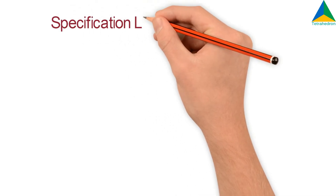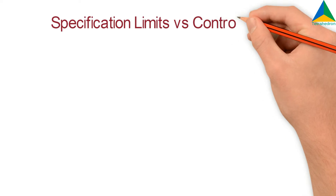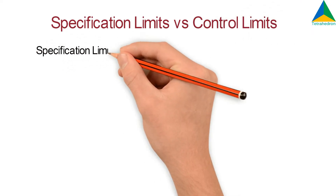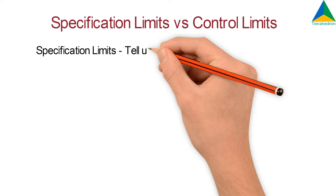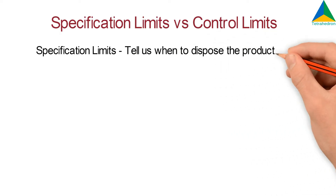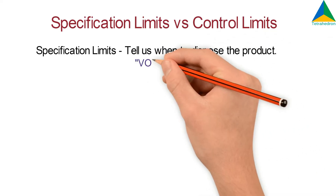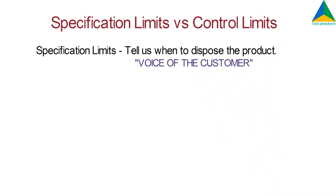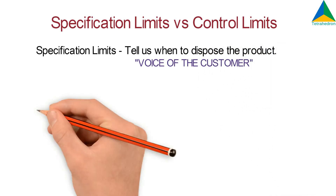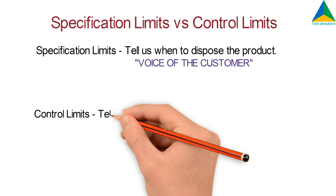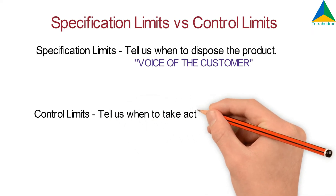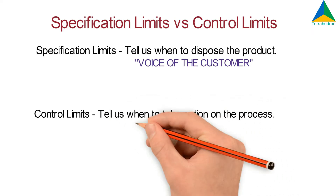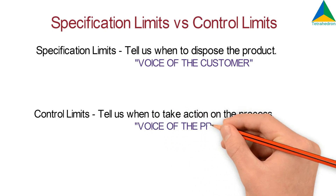Specification Limits vs Control Limits. Specification Limits tell us when to dispose the product — they are the voice of the customer. Control Limits tell us when to take action on the process — they are the voice of the process.